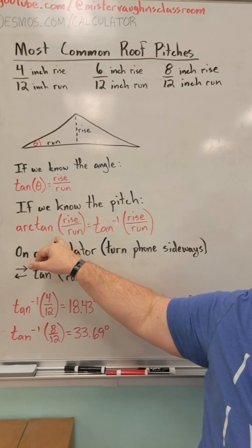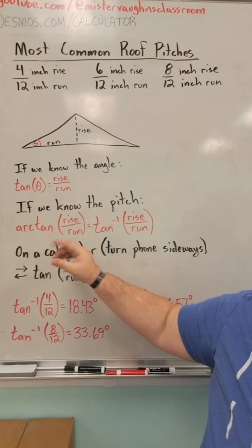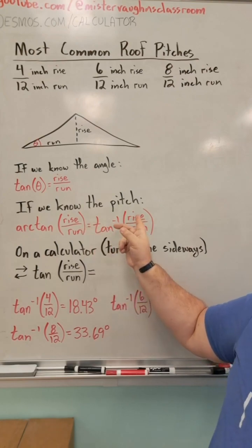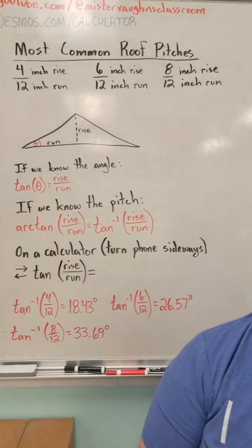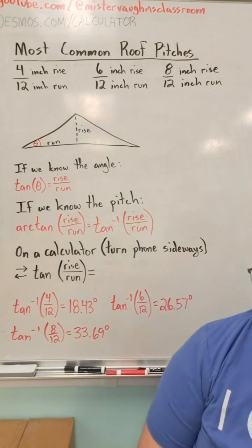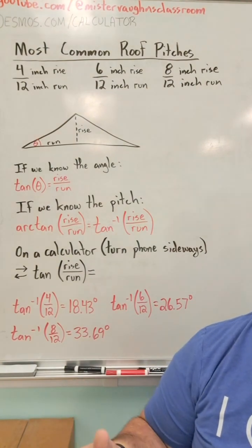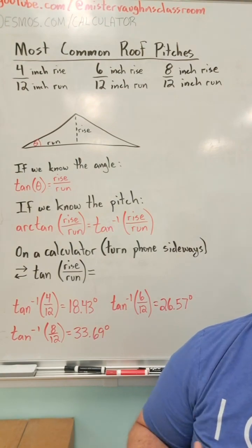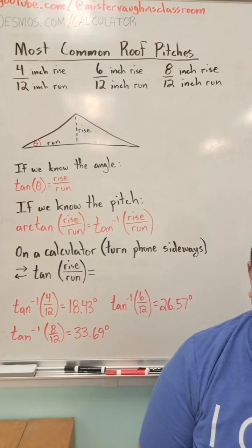On a calculator, you're generally going to see arc tangent written as tan to the minus 1 power. Then you have your rise over your run. On a calculator, I threw mine into my phone calculator. If you turn it sideways, it'll give you the scientific calculator.